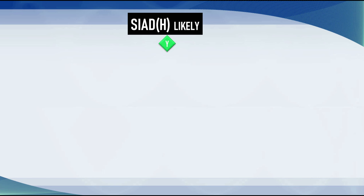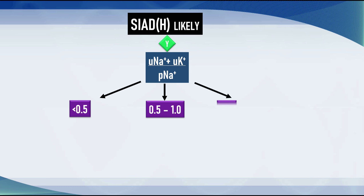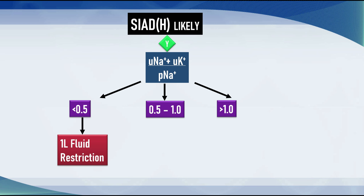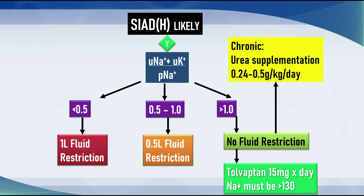Once you've done your calculation, three options may occur. If the result is less than 0.5, restrict the patient to less than one liter per day. If it's between 0.5 and 1, half a liter of fluid restriction is indicated. If it's greater than 1, there is no indication for fluid restriction — in that case you're looking at alternatives like tolvaptan or chronic treatments such as urea.